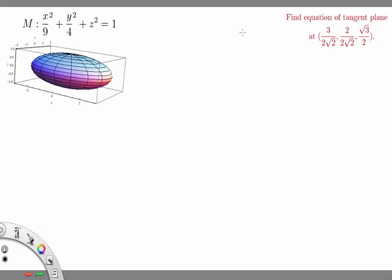Let's work through an example of using a parameterization of a surface to find the equation of the tangent plane to the surface at a particular point. So in this case M is our surface given by x squared over 9 plus y squared over 4 plus z squared equals 1. And if we look at some particular point on there, the idea is that because the surface is smooth, there'll be some tangent plane.